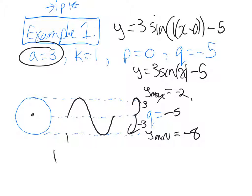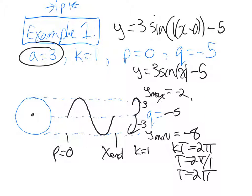And I know that p is where the cycle starts. And in this case, p is 0. And I know that k is 1, which means it's going to normal speed of rotation. And k times t is 2 pi. So t equals 2 pi over 1. t equals 2 pi. So that would make the end of the cycle. x end is going to be equal to the start, 0, plus 2 pi, which is 2 pi. So that, folks, is your curve. So you know the period length from here to here is 2 pi. Has a maximum of negative 2 and a minimum of negative 8.